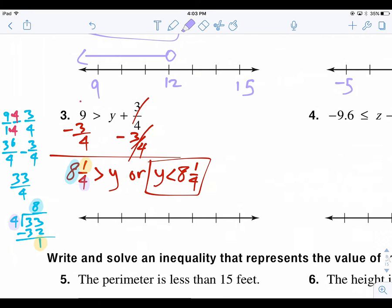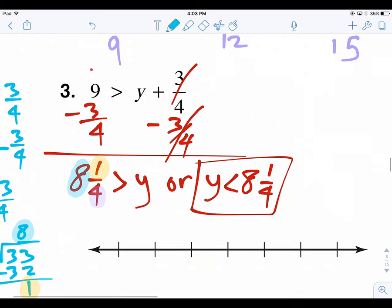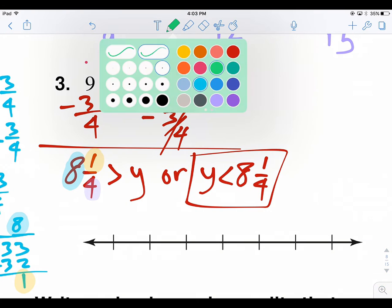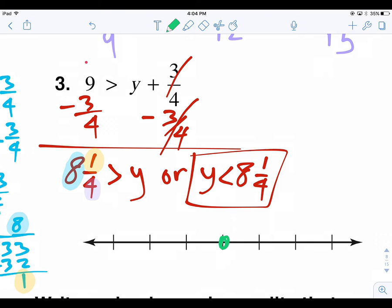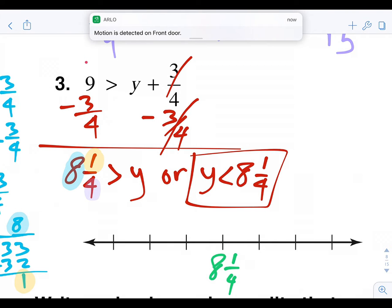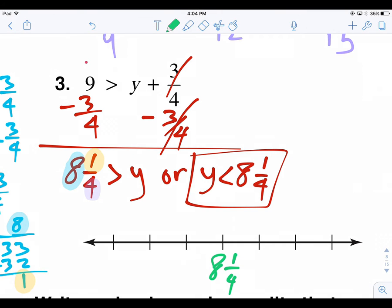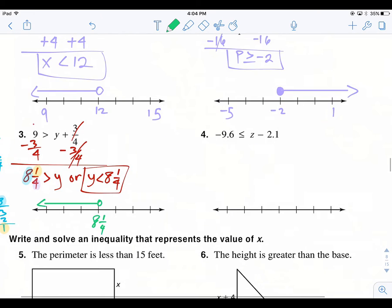Now let's graph that. We'll do this quickly. You're allowed to graph these things quickly. So I'm just going to write 8 and 1/4. y is less than. It's supposed to be open. I keep getting messages. I'm sorry, guys. Open, and it's less than, so it moves in this direction. So far, so good.